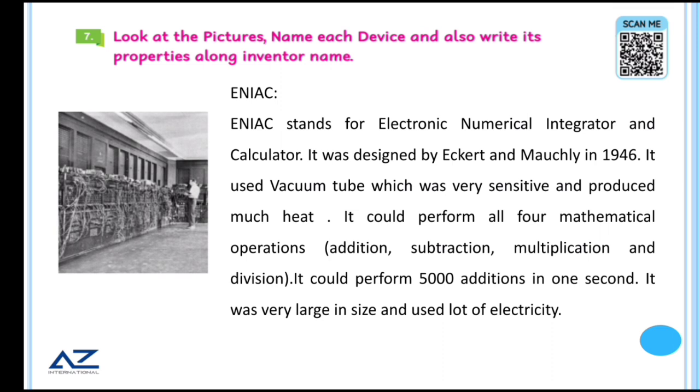ENIAC. ENIAC stands for Electronic Numerical Integrator and Calculator. It was designed by Eckerd and Mockley in 1946. ENIAC used vacuum tubes. As I told you before, this was a very sensitive device. It produced a lot of heat. It required a specially air conditioned room. It would heat up very quickly, which is why it would also burn. Inside it you could only perform 4 mathematical operations: addition, subtraction, multiplication and division. It could perform 5000 additions in one second. It was very large in size and used a lot of electricity.